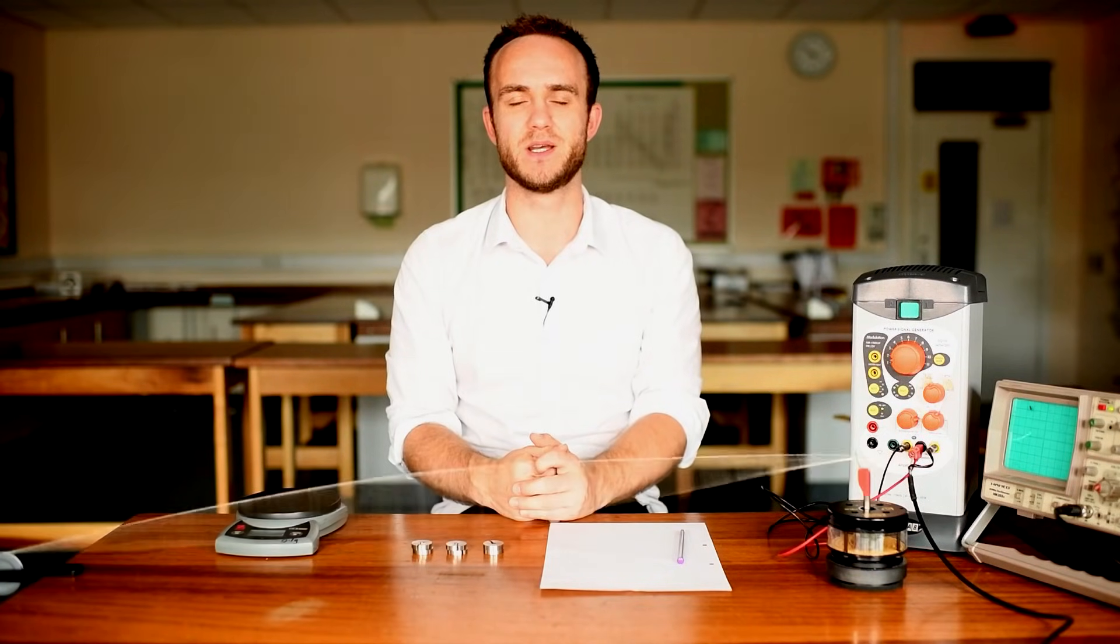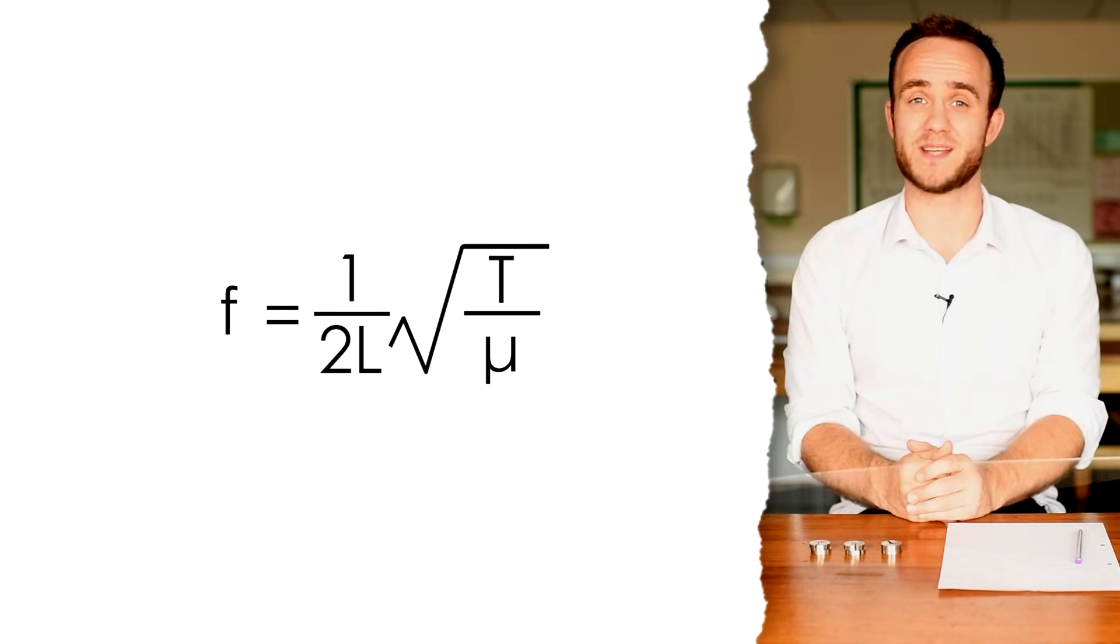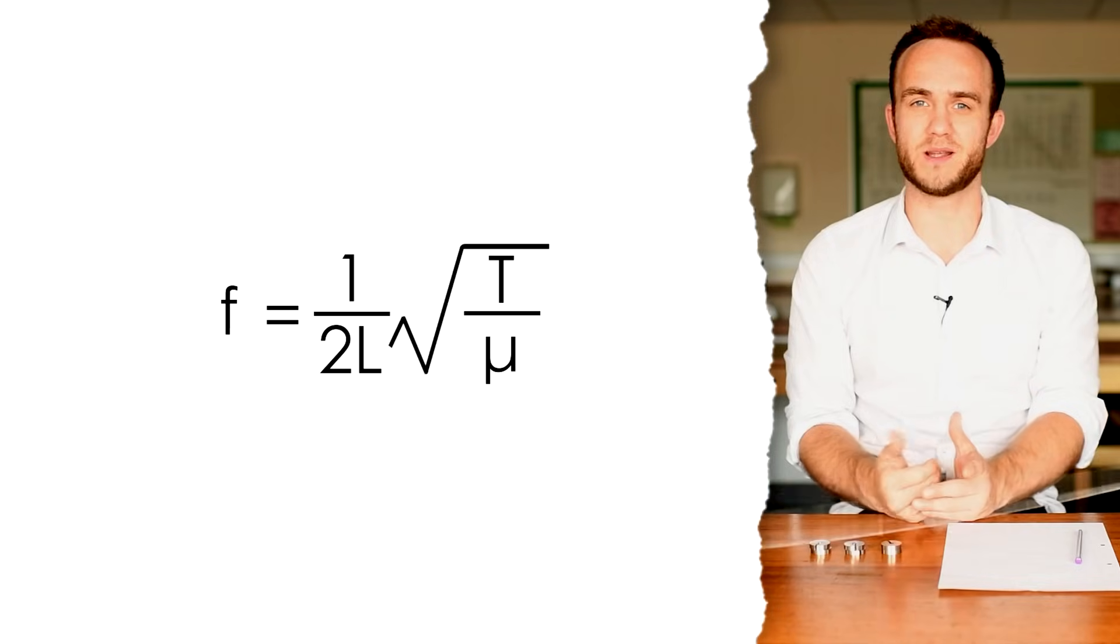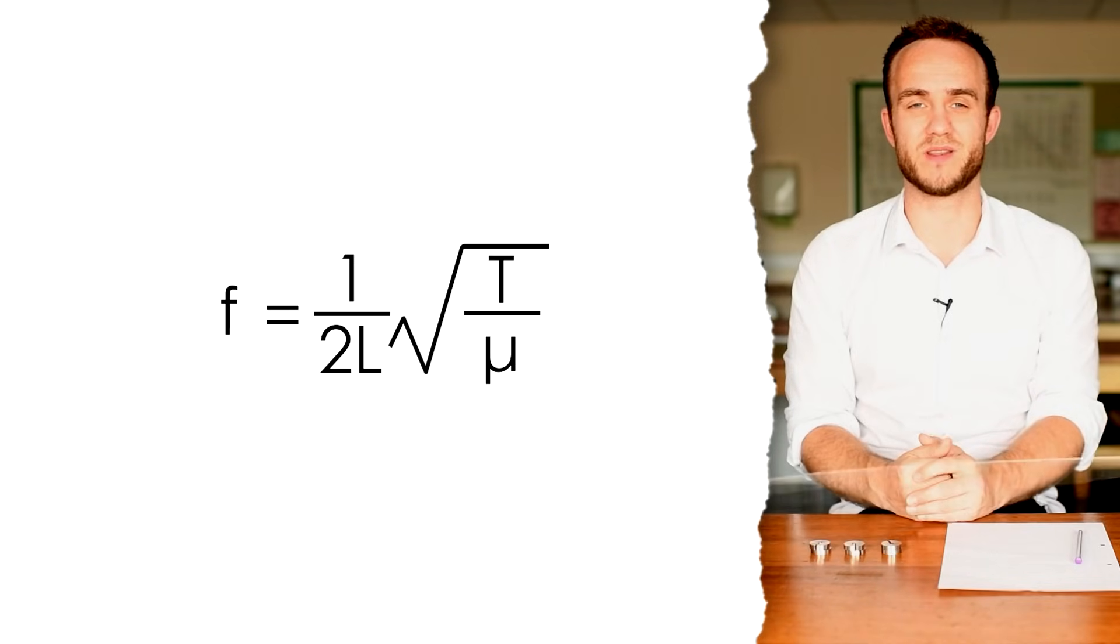Now, what we want to do is find out what frequency is needed to make this first harmonic stationary wave on the piece of string. And the equation for this is F equals 1 over 2L times the square root of T over mu. Now, that might seem a little bit complicated, and that's why this experiment isn't the easiest, but let's break it down.